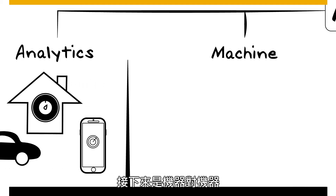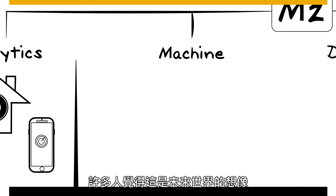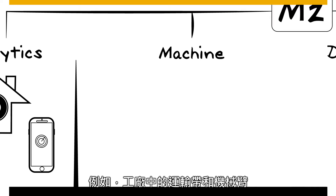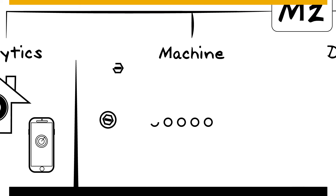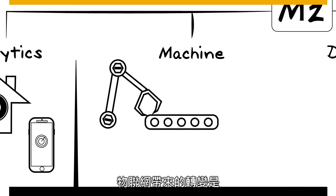The next one is machine-to-machine. This is the idea where two machines are talking to each other. I know people are thinking futuristic, but this has actually been around since the 80s. On the shop floor, you had a belt and an arm — the arm broke, the belt stopped; the belt broke, the arm stopped. It's been around forever.